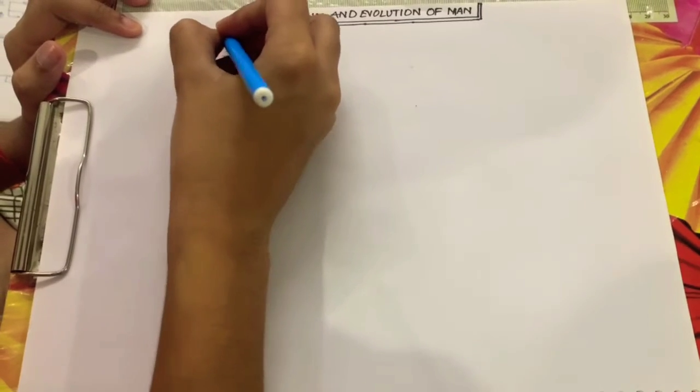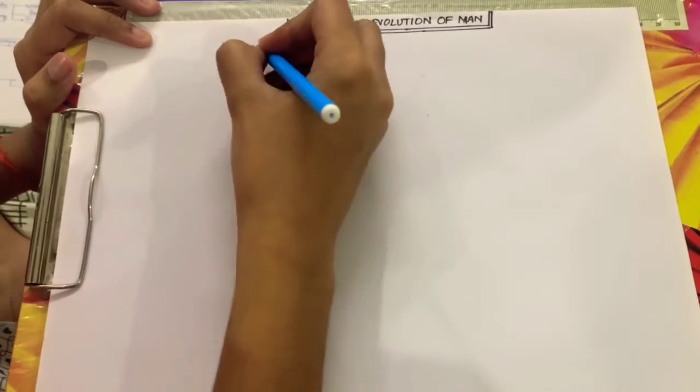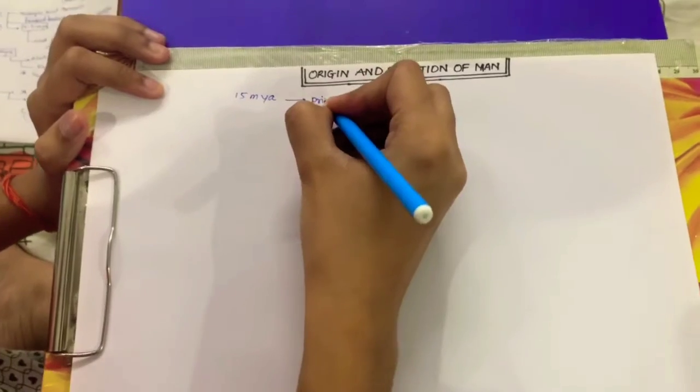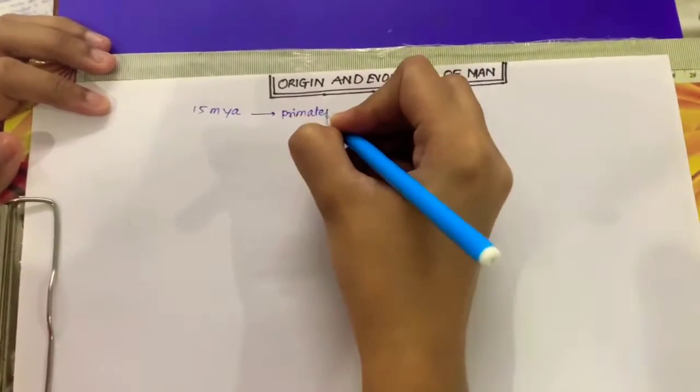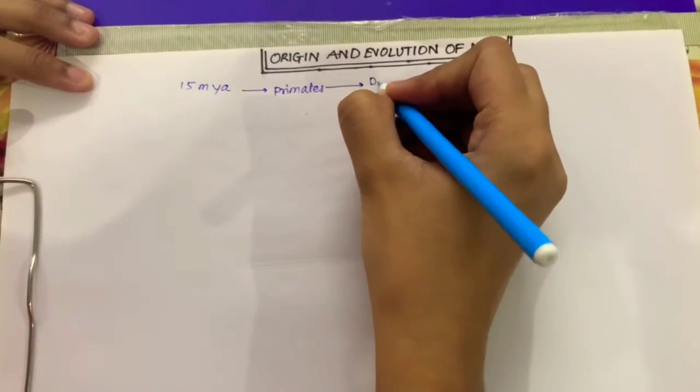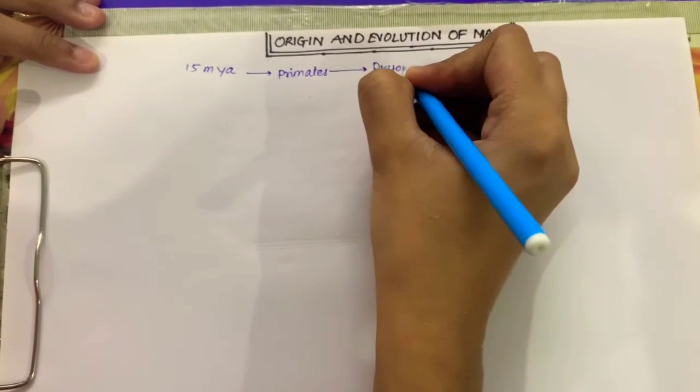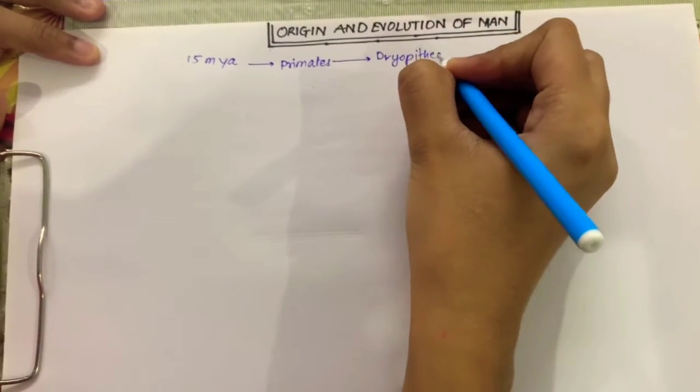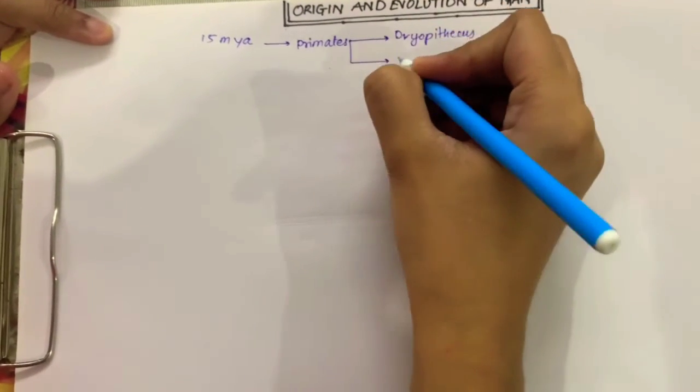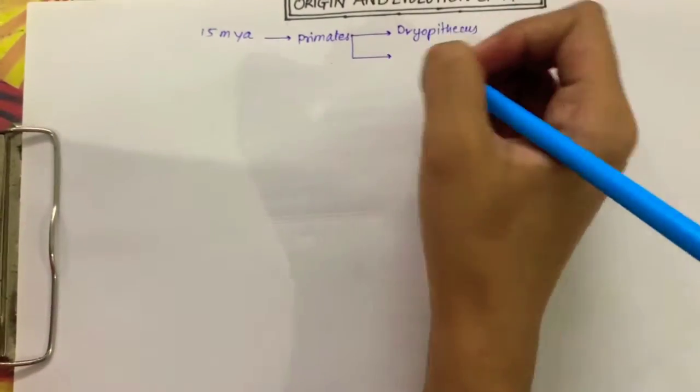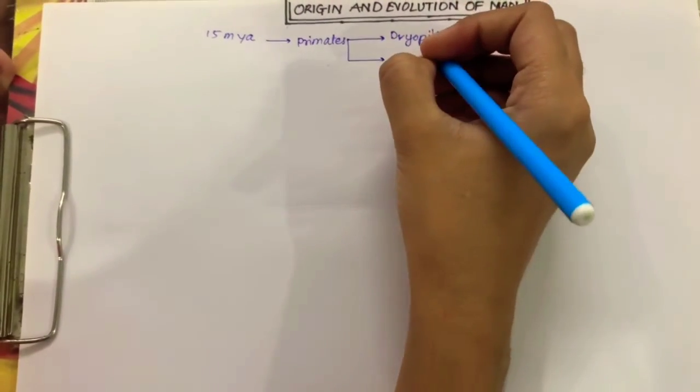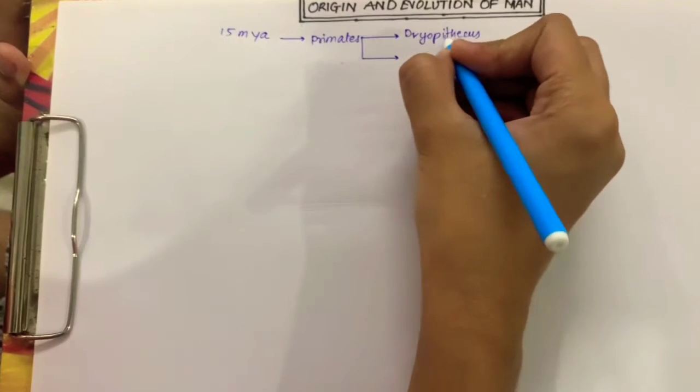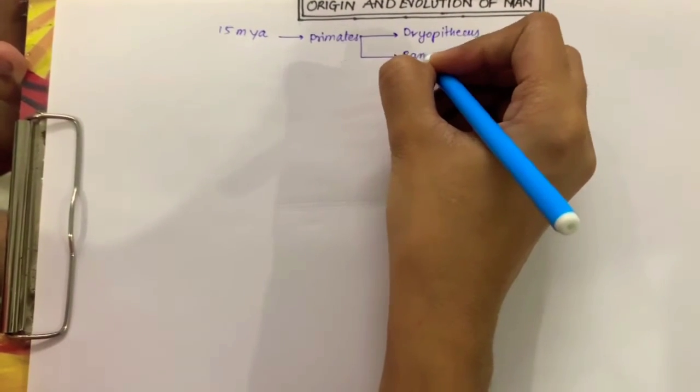About 15 million years ago, there were two primates found. They were known as Dryopithecus and Ramapithecus.